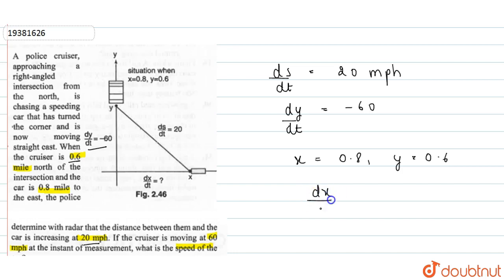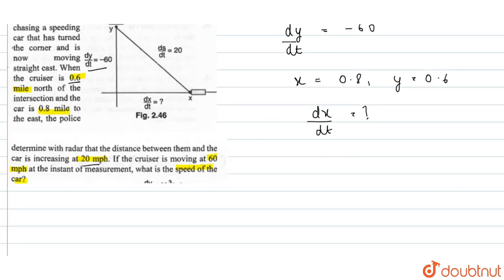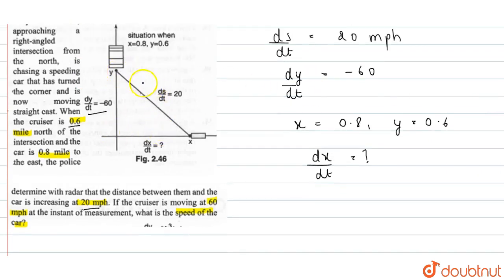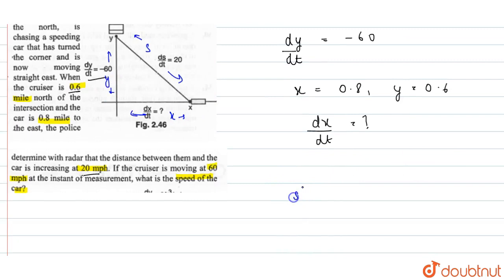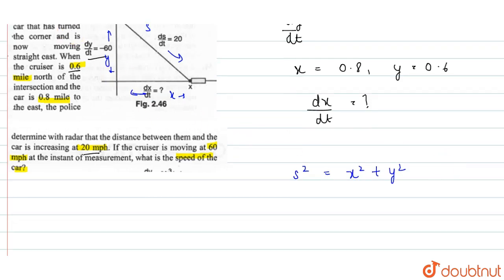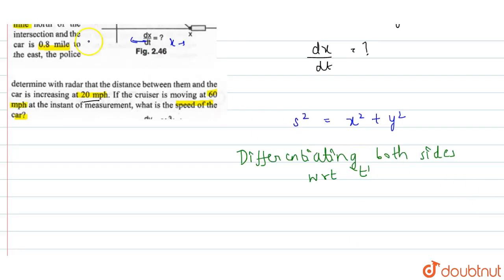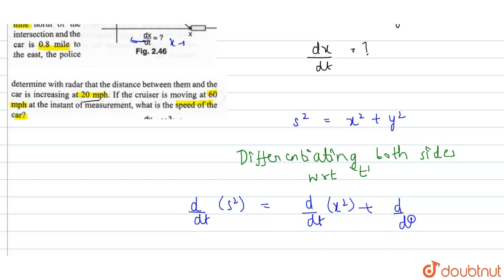So, looking at the right angle triangle, one side is x and the other side is y, giving us x² + y² = s². We will differentiate both sides with respect to t. So, d/dt of s² equals d/dt of x² plus d/dt of y².